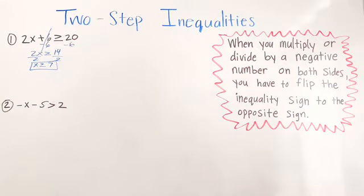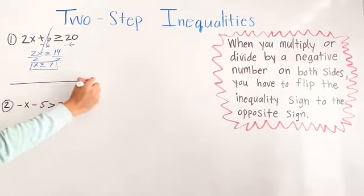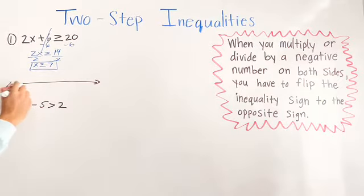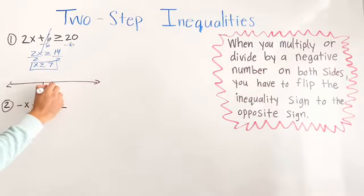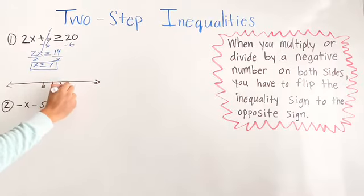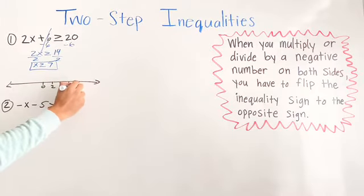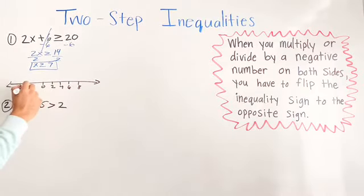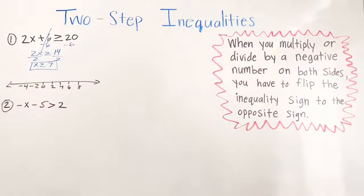You can go ahead now and graph it if your teacher asks you to graph it. Go 0, 2, 4, 6, 8, negative 2, negative 4, and so on.